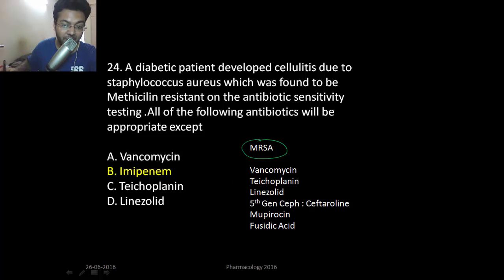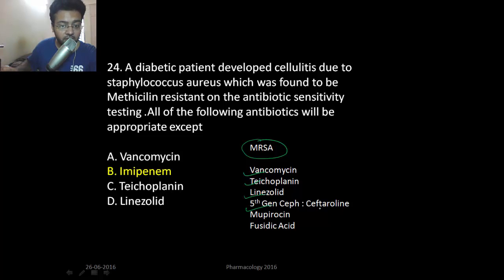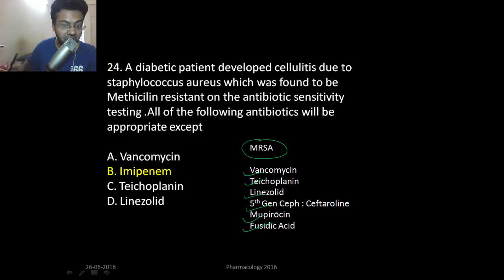For MRSA, the drugs that can be used include vancomycin, linezolid, teicoplanin, fifth-generation cephalosporins like ceftaroline, mupirocin, and fusidic acid. Importantly, imipenem cannot be given for MRSA.